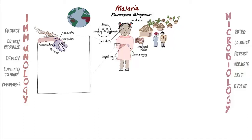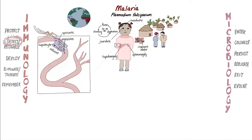Merozoites can then bud off of the hepatocyte and enter the bloodstream undetected by the immune system because they're wrapped in liver cell membrane. Once these wrapped merozoites, also called merozomes, reach the lung vasculature, the merozomes begin to break down over the next 48 to 72 hours. Free merozoites are then released in pulmonary capillaries where the red blood cells are densely packed and moving slowly so that they can easily be invaded.